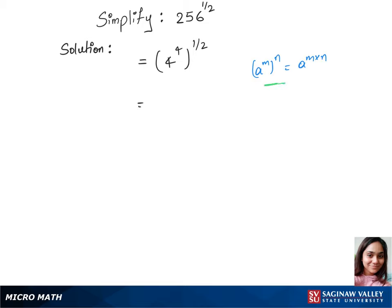We can write this as 4 to the power 4 times 1 over 2, which gives us 4 to the power 2. Since 4 times 4 is 16, that is our final answer.